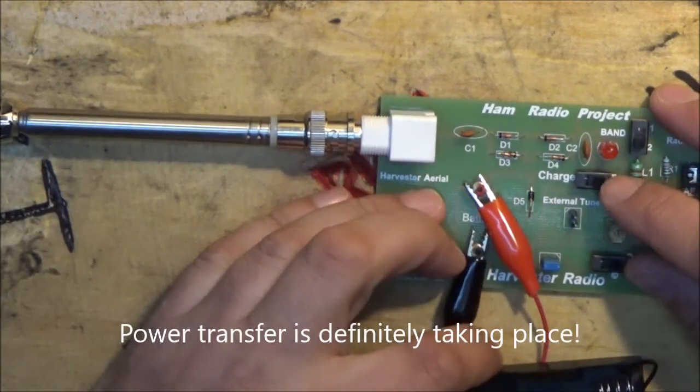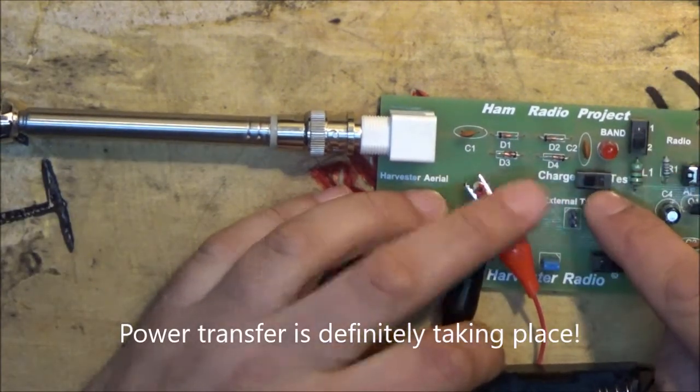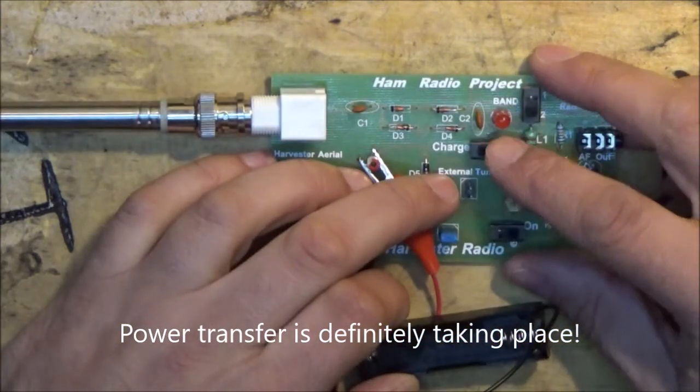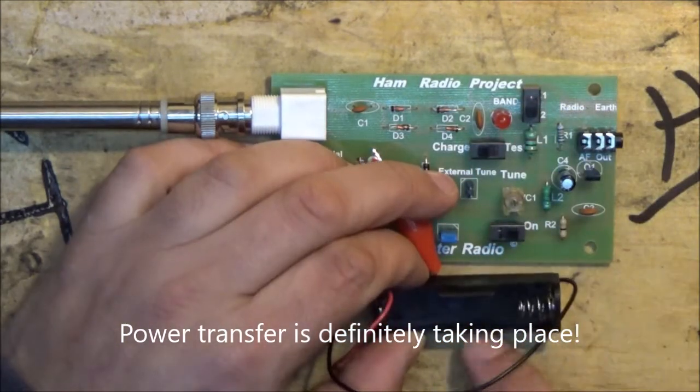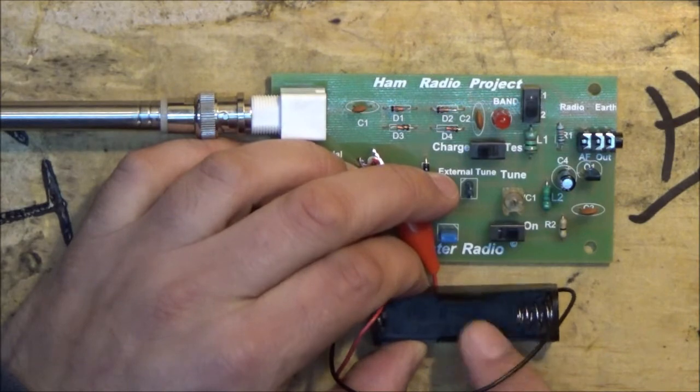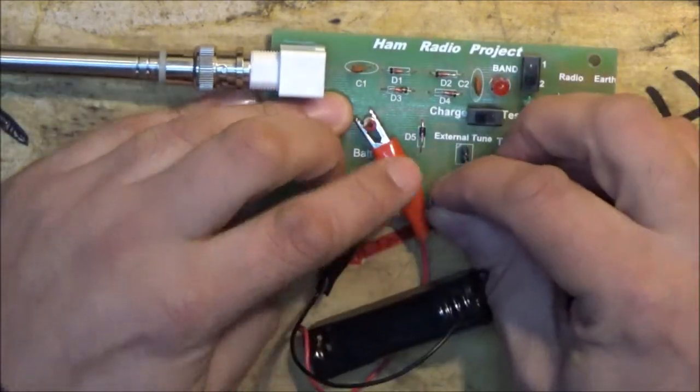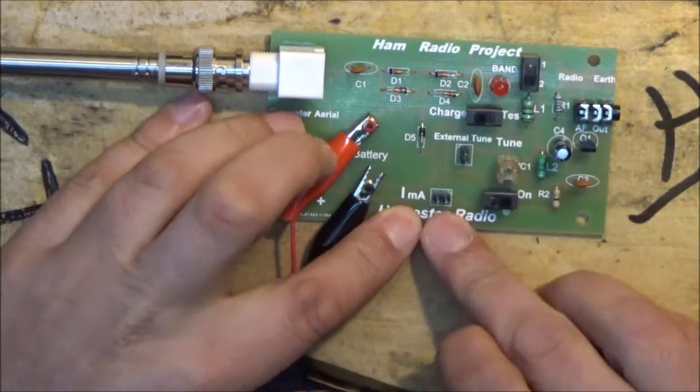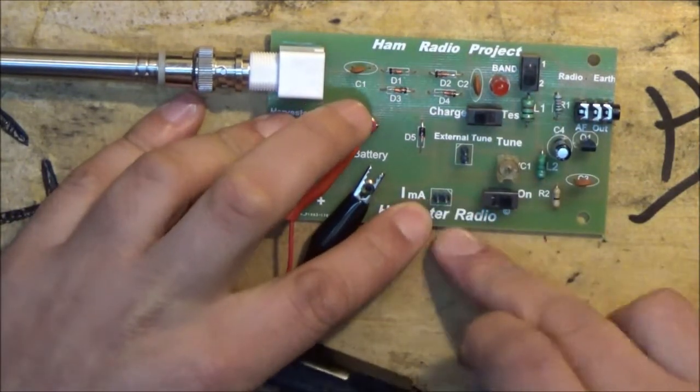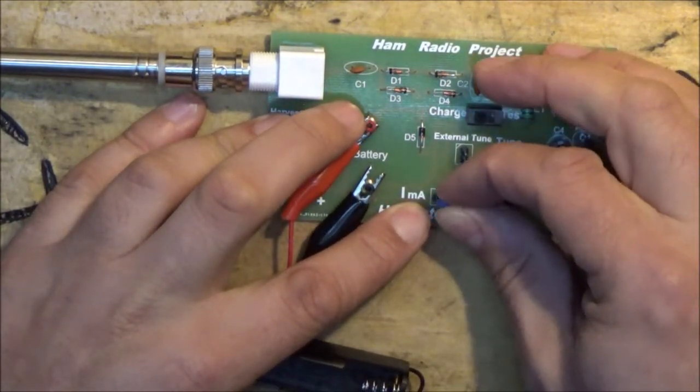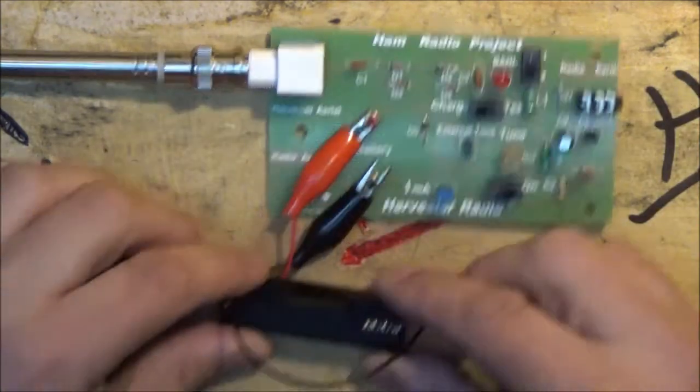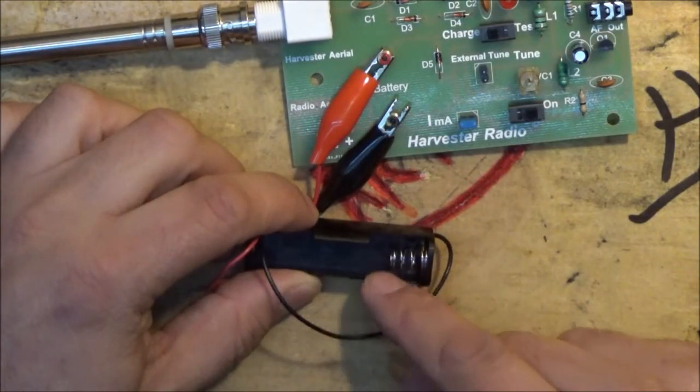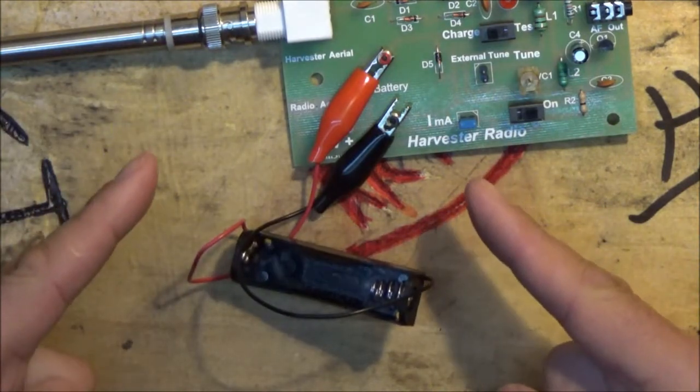So that quite quickly shows us that actually this works. So the idea is, if we put this in the charge position, this switch here, in the charge position, and we put a battery in here, this battery will charge. What we can do is we can remove this little connector here, we can put a current meter in line with this, and we can see how much current is going into our battery. How cool is that?